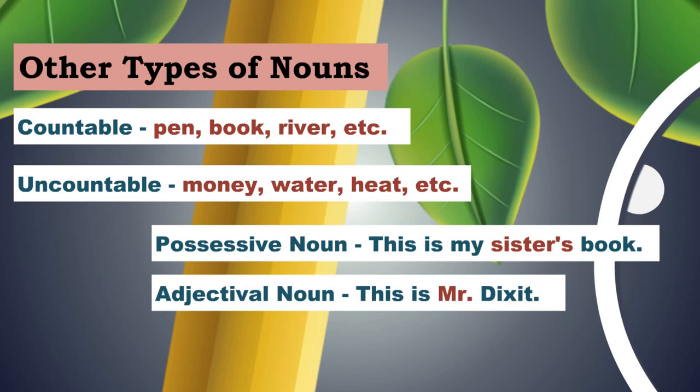Adjectival noun: look at this — this is Mr. Dixit. Now this word Mr. is also a noun, but it is used as an adjective. So it is not possession, but it is an adjectival noun. Any title like this — these are adjectival nouns. So possessive noun and adjectival nouns. In order to learn more in detail about nouns, you can visit our channel, where we have separate presentations on nouns and the different types of nouns.